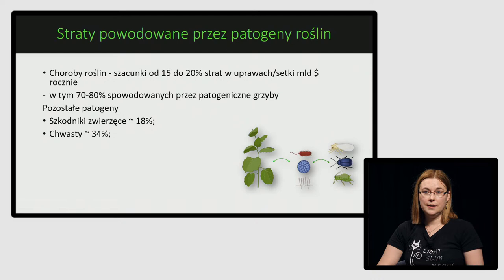Jeśli chodzi o szkodniki zwierzęce, to są takie większe organizmy jak owady, ślimaki, także kręgowce – wszystko, co może zniszczyć roślinę i spowodować spadek jej wydajności.